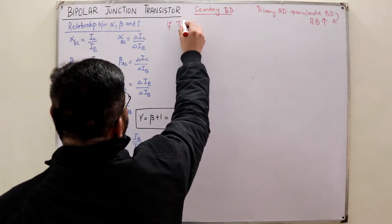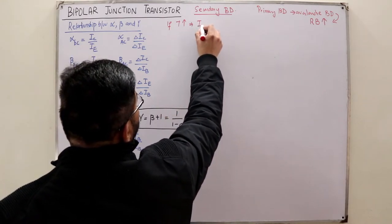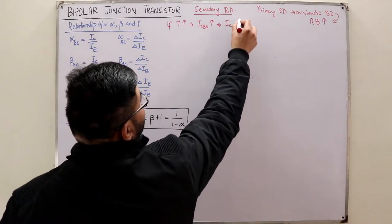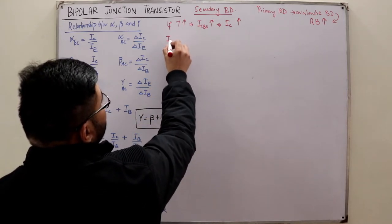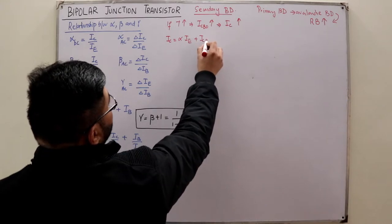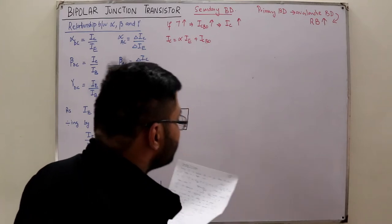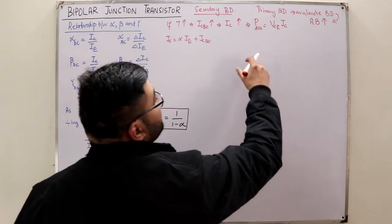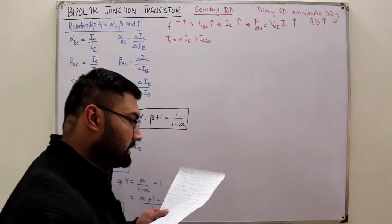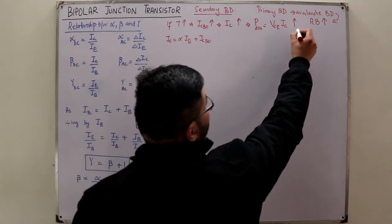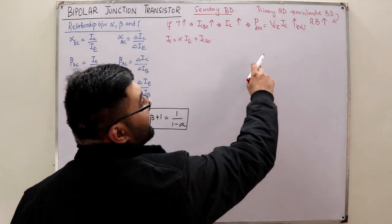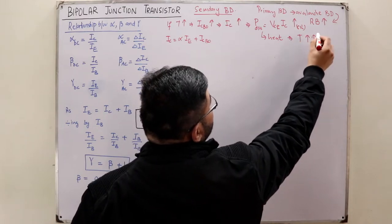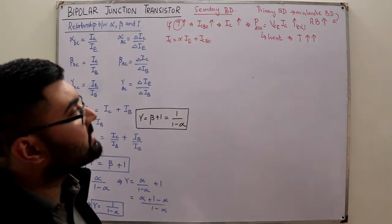Secondary breakdown is due to a change in temperature. If the temperature increases, the reverse saturation current ICBO increases. Since IC equals alpha times IE plus ICBO, an increase in ICBO causes IC to increase. This raises the power dissipation, which equals VCE multiplied by IC (for the common emitter), meaning more energy is lost as heat, which further increases the temperature.